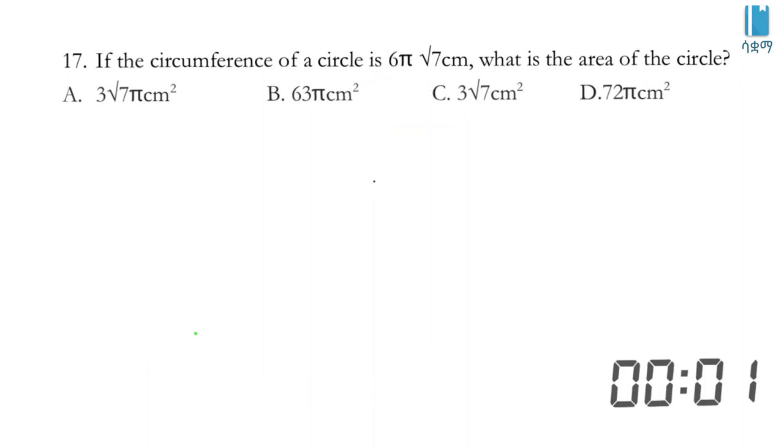Next problem: If the circumference of a circle is 6π√7 centimeters, what is the area of the circle? Options: A. 3√7π centimeter square, B. 63π centimeter square, C. 3√7 centimeter square, D. 72π centimeter square.